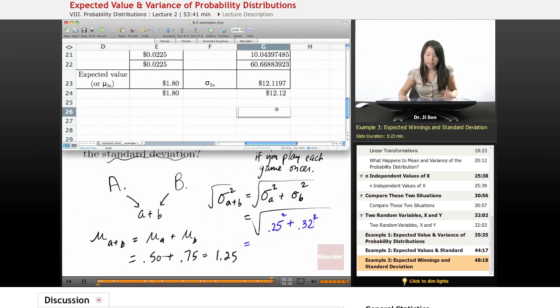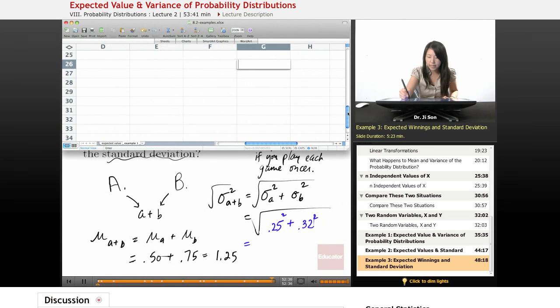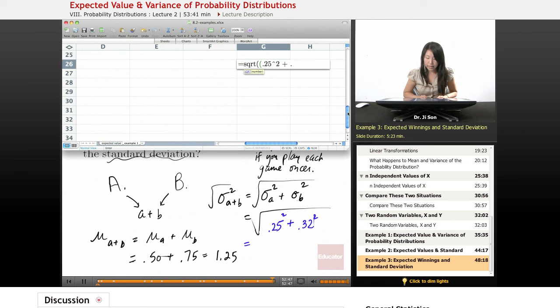Well, I'm just going to use one of these rows to help me out here just so I could calculate something. So here I'm going to write square root of 0.25 squared plus 0.32 squared. And the nice thing is Excel, sometimes better than us, knows order of operations.